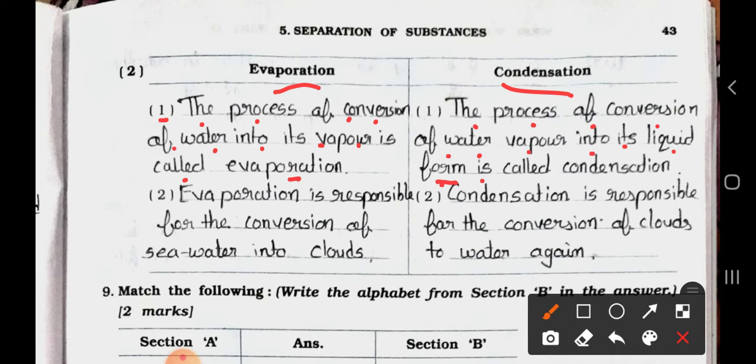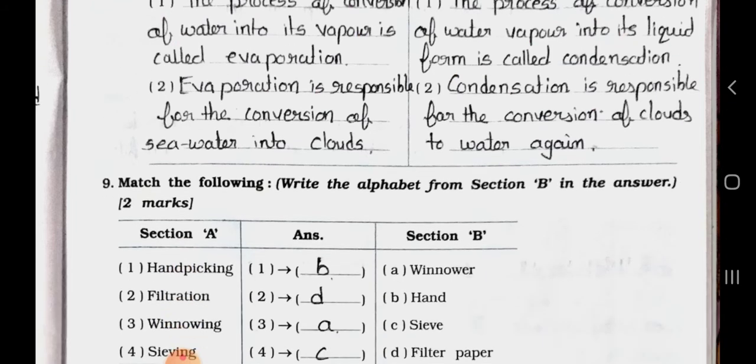Now see the second point. In evaporation, evaporation is responsible for the conversion of seawater into clouds. And here in condensation, condensation is responsible for the conversion of clouds to water again.